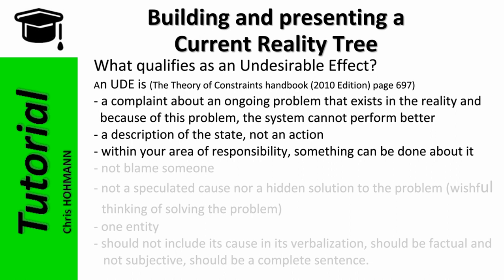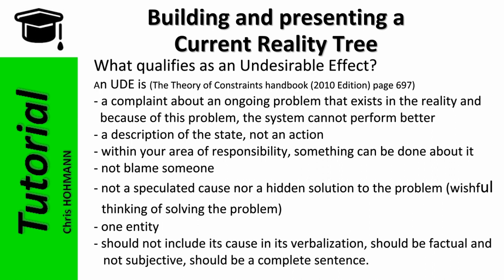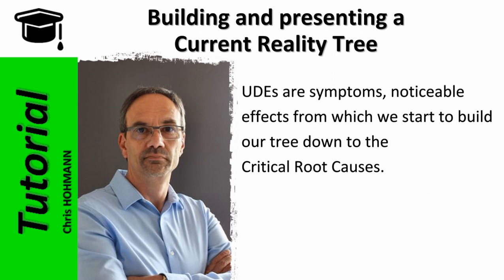Something can be done about it - hopefully yes, check. It must not blame someone. It must not be a speculated cause. It must not be a hidden solution or wishful thinking. It should contain one entity and not include its cause in its verbalization - check. It should be factual and not subjective - yes, it can be proven by figures from financial statements, check. It should be a complete sentence - they are, check. These are symptoms, noticeable effects from which we start to build our tree down to the critical root causes.